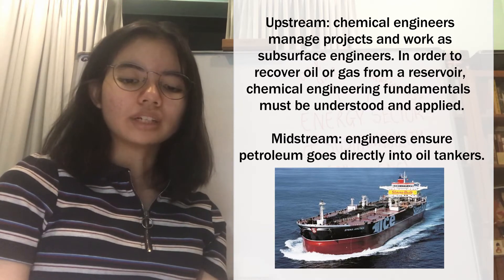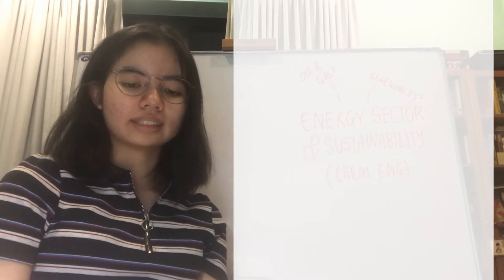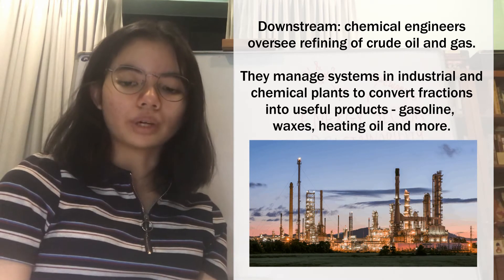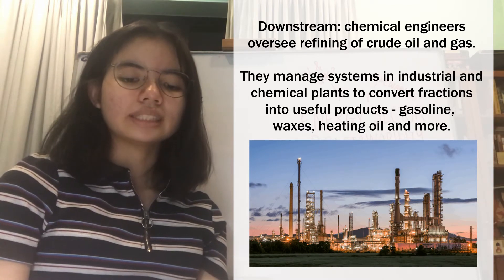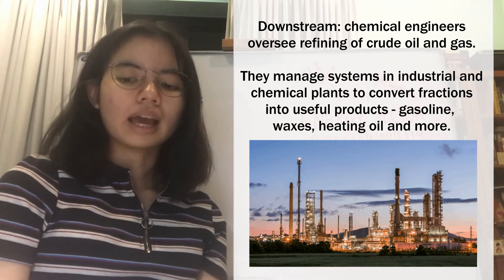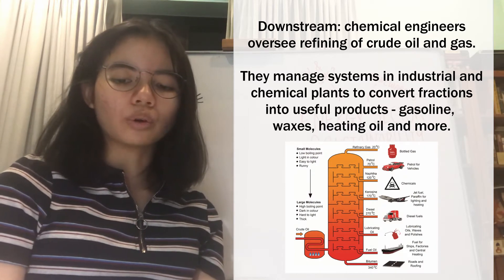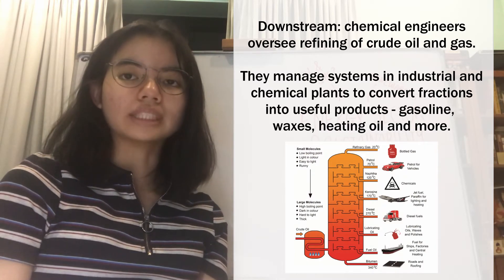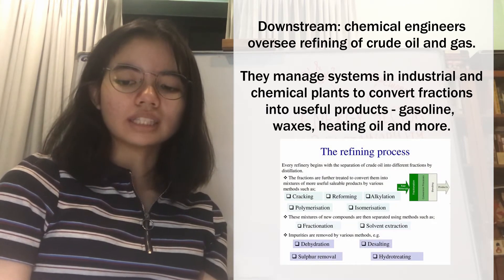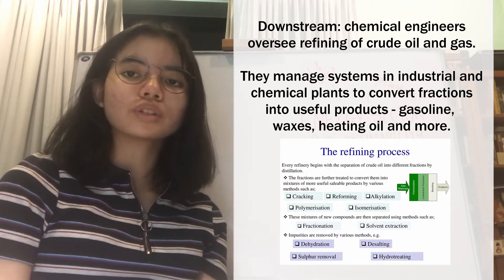In the midstream, chemical engineers ensure petroleum and oil materials go directly into gas tanks. In the downstream, chemical engineers oversee the refining of petroleum crude oil and raw natural gas, since they manage, control, and maintain systems in industrial and chemical plants. After the fractional distillation process in a distillation tower to separate crude oil into its fractions of different boiling points and carbon chain lengths, engineers oversee processes of cracking, reforming, alkylation, polymerization, and isomerization to convert the fractions into useful soluble products.